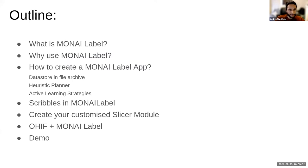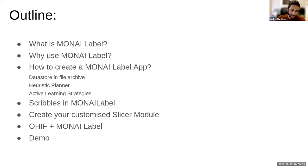Here is the outline for today. I'll talk about what MONAILabel is and the main highlights for the second version. Then I'll cover why to use MONAILabel, how to create a MONAILabel app, the data store support, the heuristic planner, active learning strategies, scribble-based segmentation, customized slicer modules, and finally OHIF integration — all features in version two.